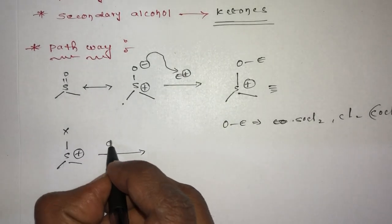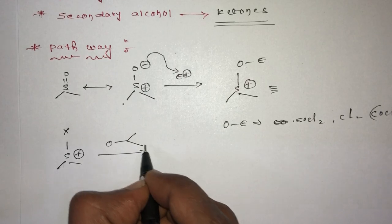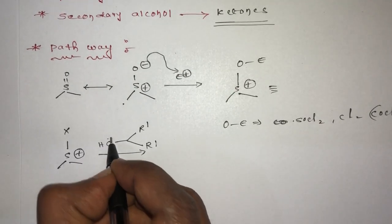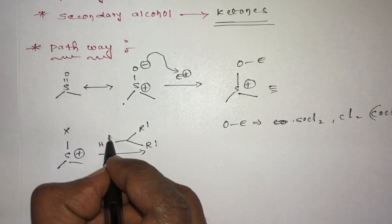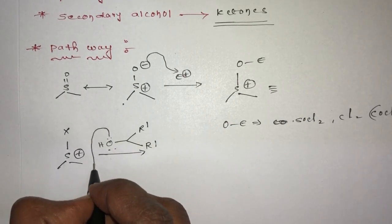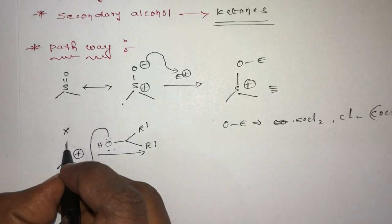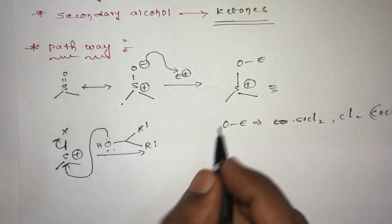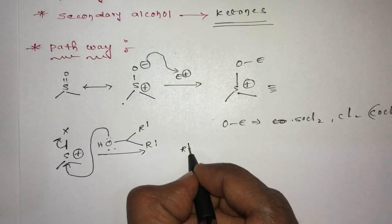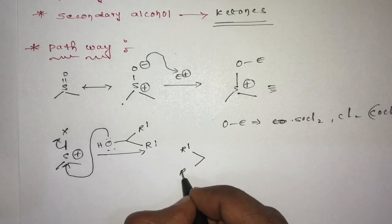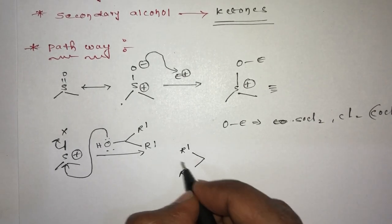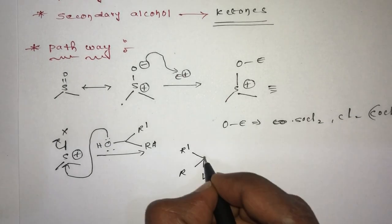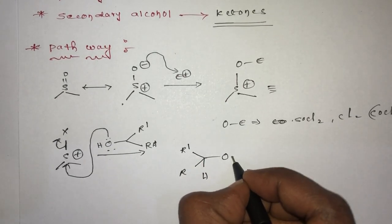Instead of the OE group, we take X — a type of halogen. When this is treated with an alcohol — here I am taking a secondary alcohol — the lone pair of electrons migrates toward the sulfur center and the halogen leaves, giving R₁, R with hydrogen and oxygen on sulfur.